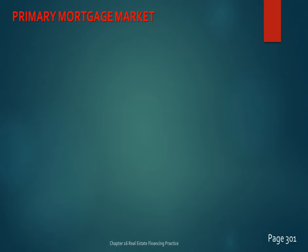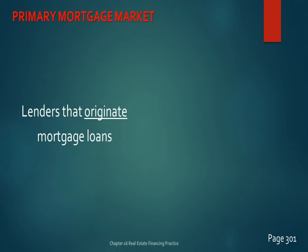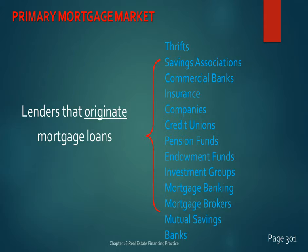The primary mortgage market is made up of lenders that originate primary loans — these are the institutions that individuals go to when they want to get loans. Most of us think about going to mortgage brokers, who don't actually lend money. They put together borrowers and individuals that want to lend money — they're brokers who bring buyers and sellers together for mortgage loans.